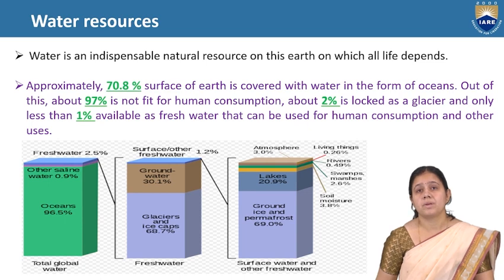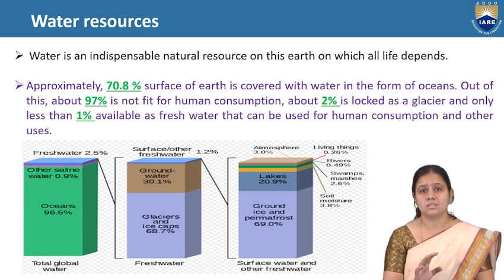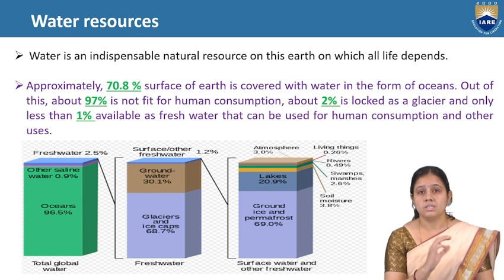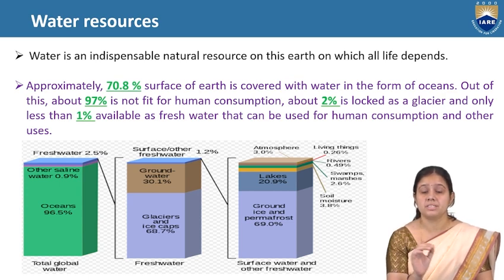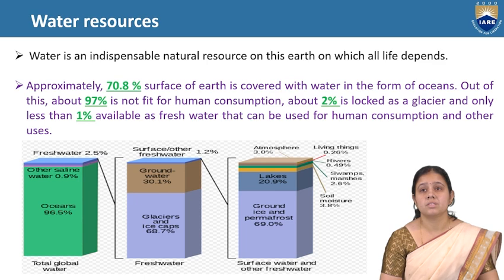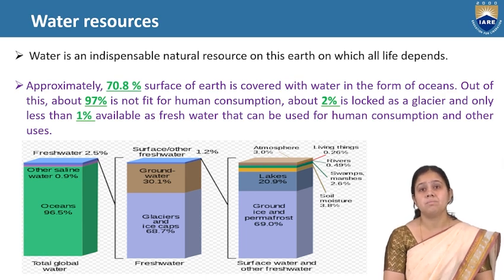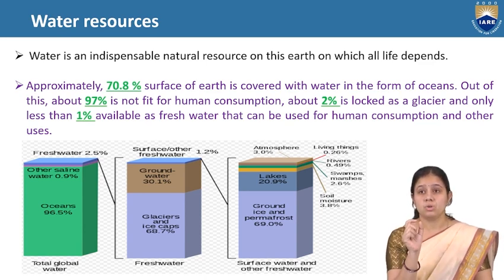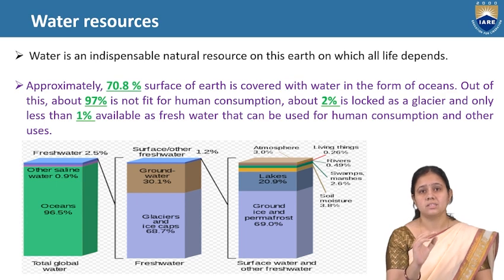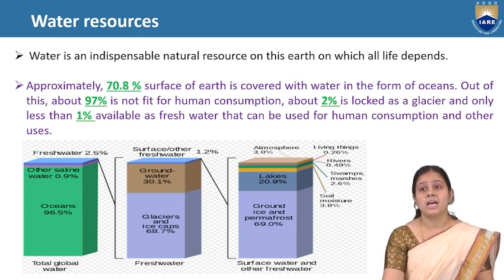Water is a very important natural resource on this earth and every life depends on water. Water distribution is very different in this hydrosphere. 78% of earth is covered with water in the form of ocean, which is saline water so we can't use it. 97% of total water is not fit for human consumption, and about 2% is already present in glaciers as frozen water. Less than 1% is available as fresh water and can be used for human consumption and other uses.